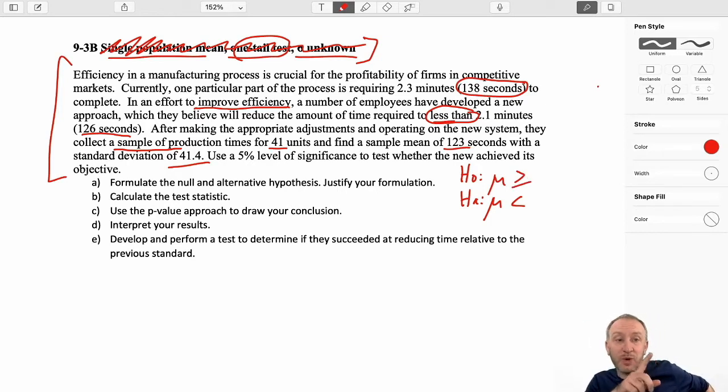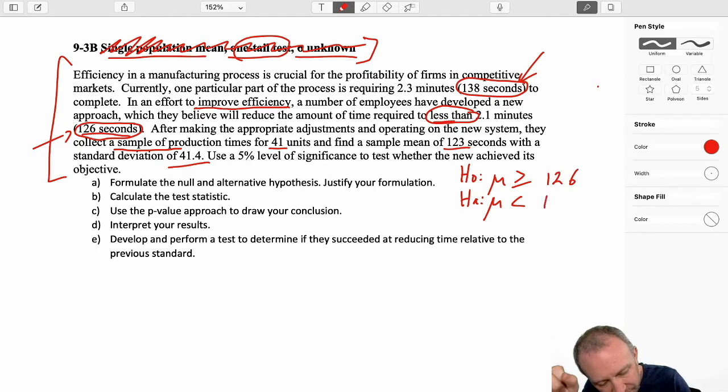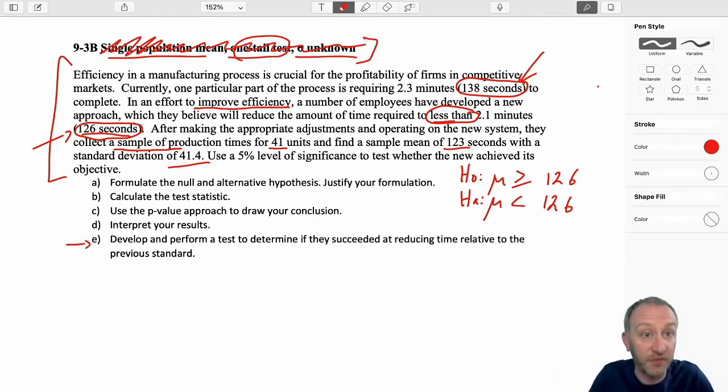Now I'm leaving the hypothesized value open for now because that's actually a little bit of a trick in this question too. There's some information in here that can be a little bit misleading. Because here it's giving me one value. Currently, it's 138 seconds. But what is it they're trying to achieve? They've developed this new system that they believe will reduce the amount of time, not necessarily just reduce the amount of time, but reduce it to less than 126 seconds. So this is actually my hypothesized value, at least for this test.